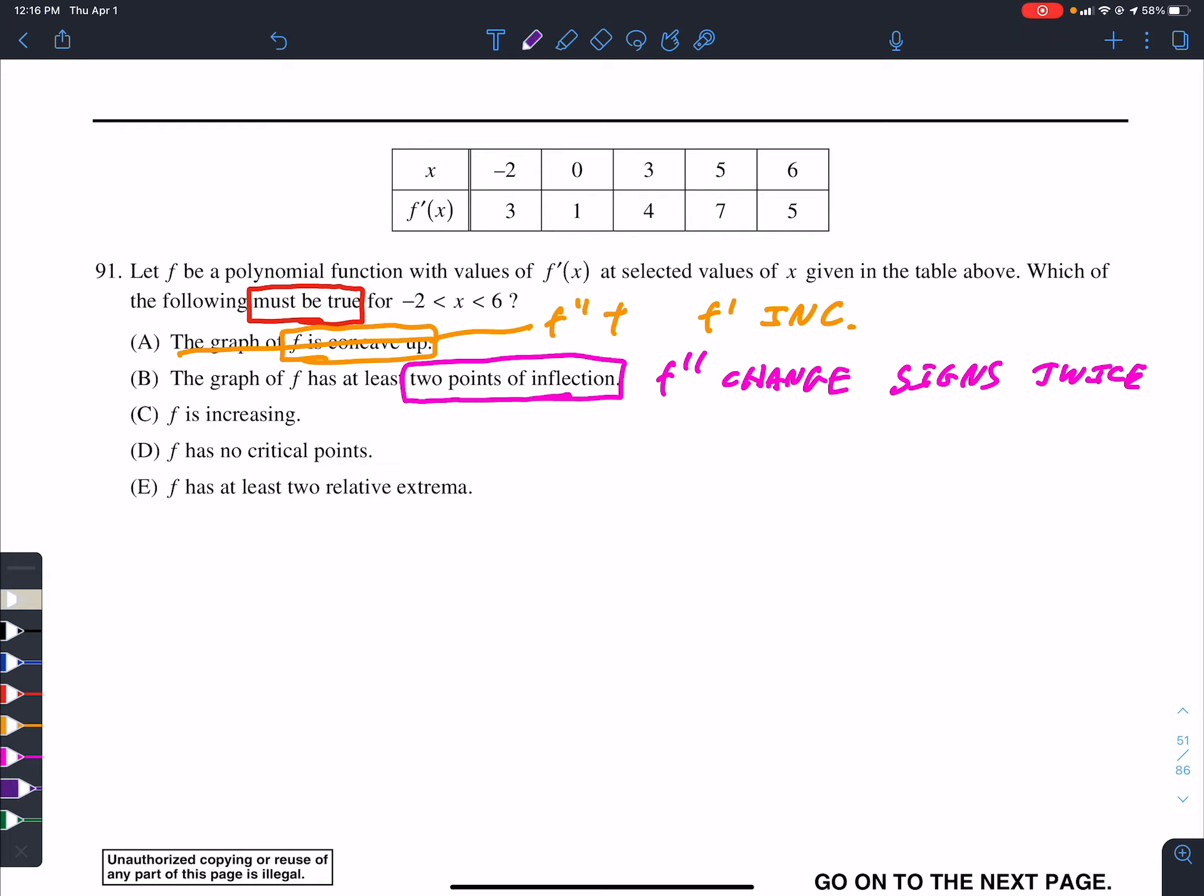So next one, F is increasing. Well, to be increasing, F prime, here's what you have to think. F prime is positive always. And you might think, oh look, it's always positive. Again, you don't know what's happening between. It could go from 3 to negative back up to 1. You don't know. So this does not have to be true. They're looking for a must be true.